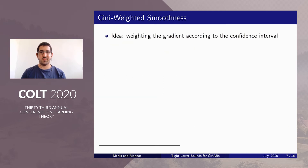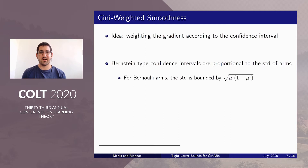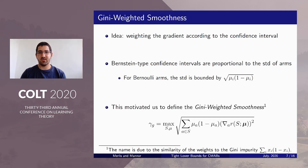This is the idea behind the Gini-weighted smoothness. More specifically, we suggested weighting the gradients according to the width of the confidence intervals. Bernstein-based confidence intervals are proportional to the standard deviation of arms, and for Bernoulli arms, which have the largest standard deviation for distributions in a bounded domain, this behaves as the square root of mu(1 - mu) for arms with mean mu. Weighting the gradients according to these terms and taking the L2 norm leads to the Gini-smoothness and to the improved regret bounds.